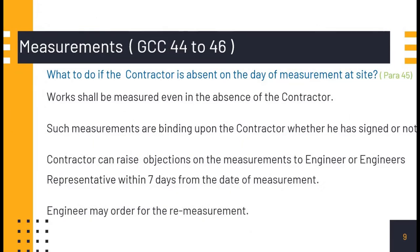What to do if the contractor is absent on the day of measurement at site? No issues — the work shall be measured even in the absence of the contractor. Such measurements are binding upon the contractor whether he has signed or not. But still the contractor can raise objections on the measurements to the engineer or engineer's representative within seven days from the date of measurement. This is a vital piece of information: if the contractor has any objections over recorded measurements, he must represent them to the engineer within seven days.